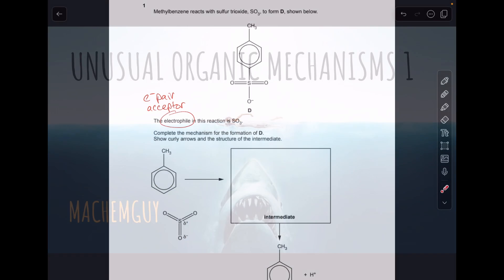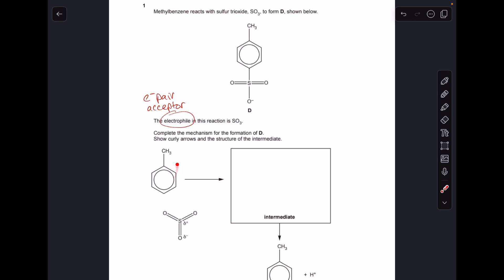Right, okay, here we go then. So we're told at the top of the question that methyl benzene reacts with sulfur trioxide to form D. I've got the structure for D up there and it's also repeated at the bottom as well. And we're told that the electrophile in the reaction is the SO3 molecule.